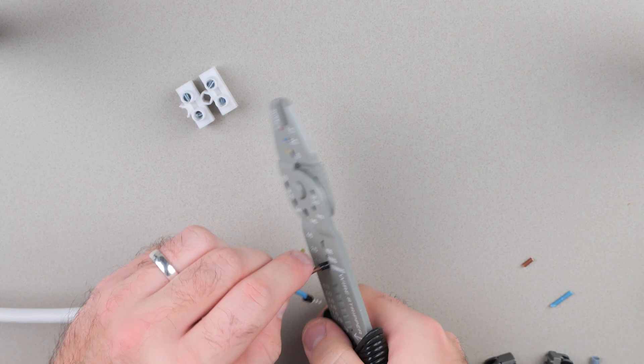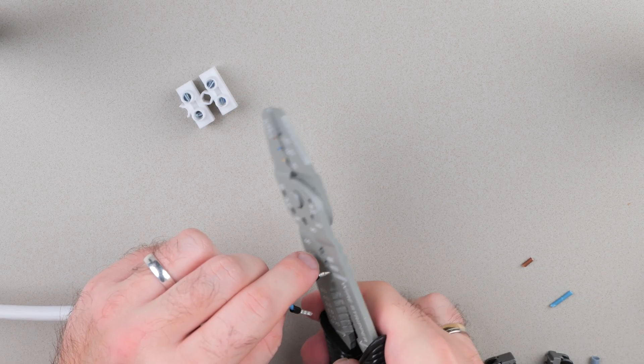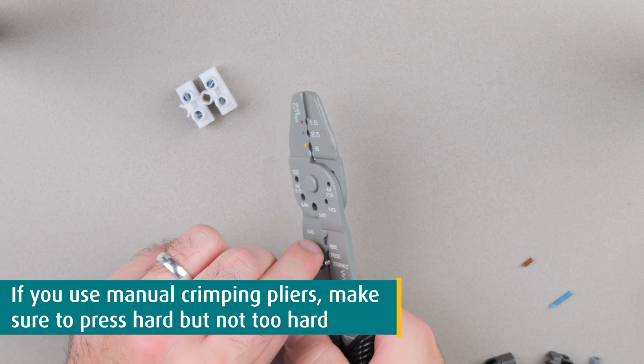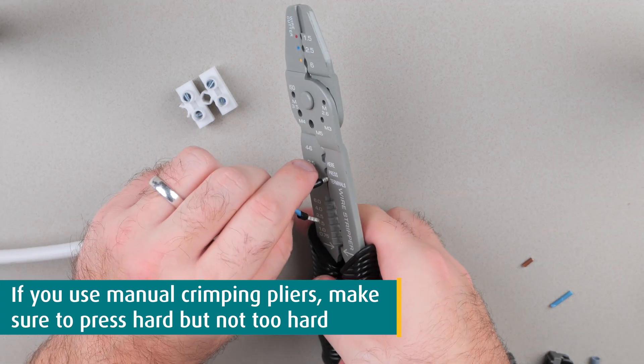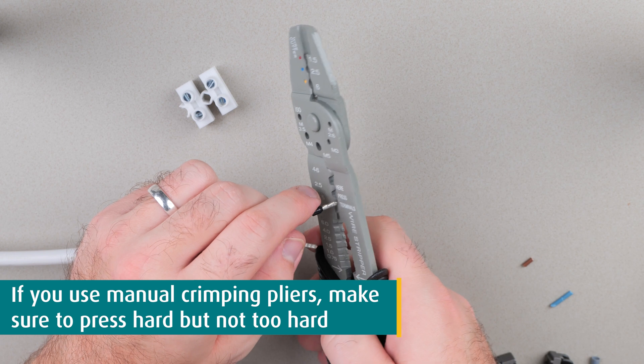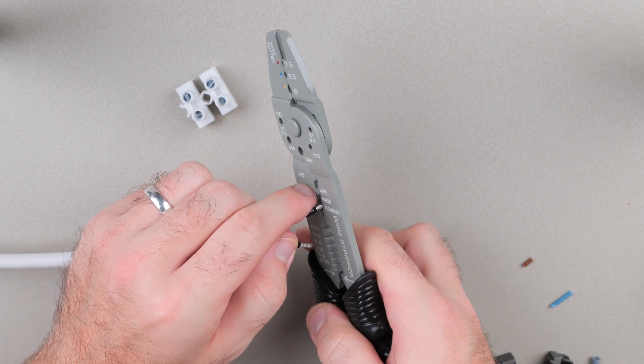If you use manual crimping pliers, it's not a big difference. Just make sure to press hard enough but not too hard because you don't want to damage the wires. It's not very complicated though, so you'll probably get it right in the first try.